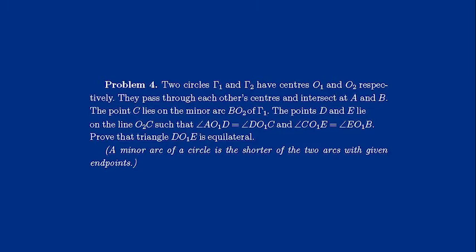The point C lies on the minor arc BO2 of gamma 1. The points D and E lie on the line O2C such that angle AO1D equals angle DO1C, and angle CO1E equals angle EO1B.